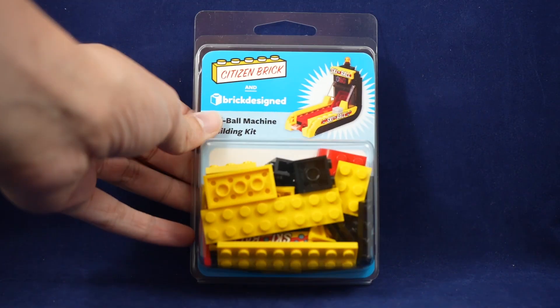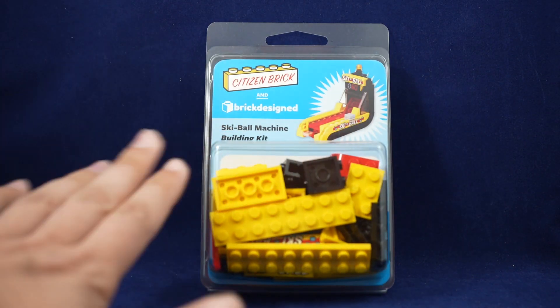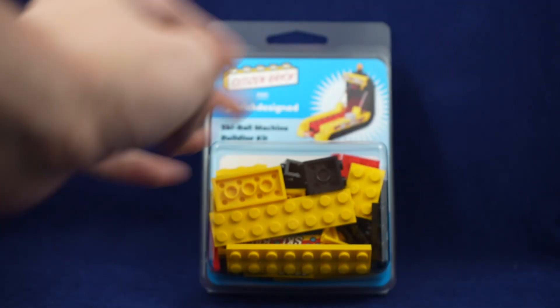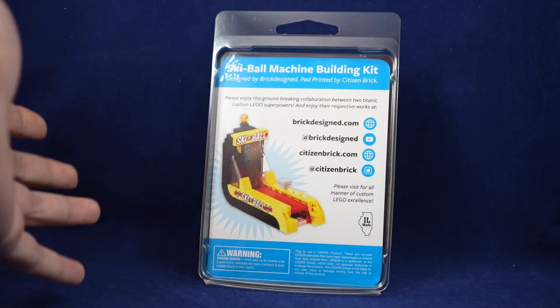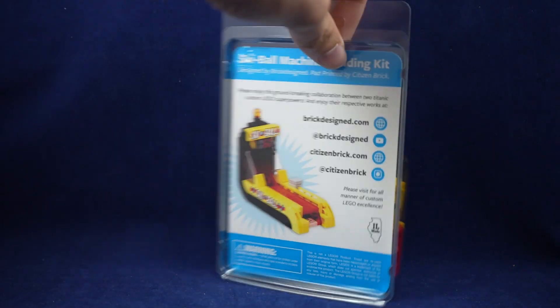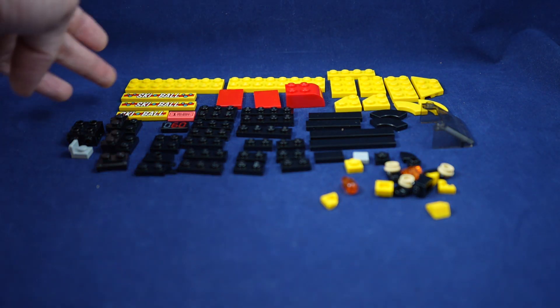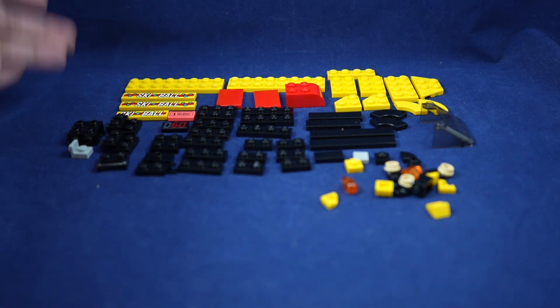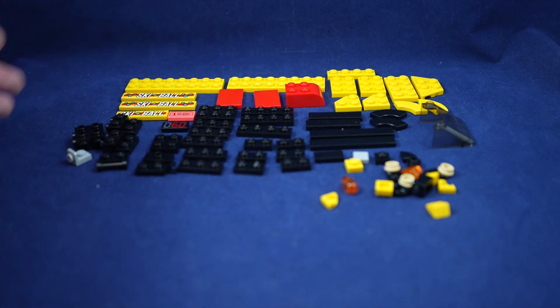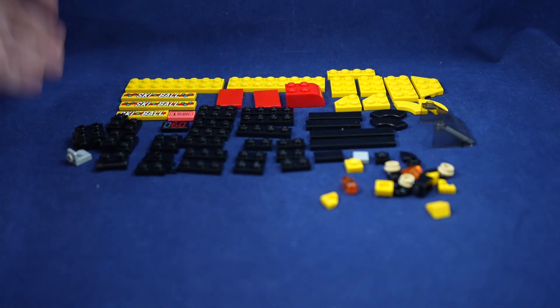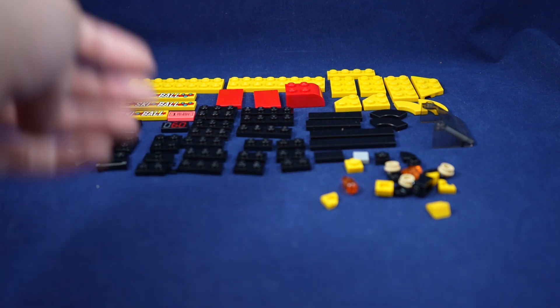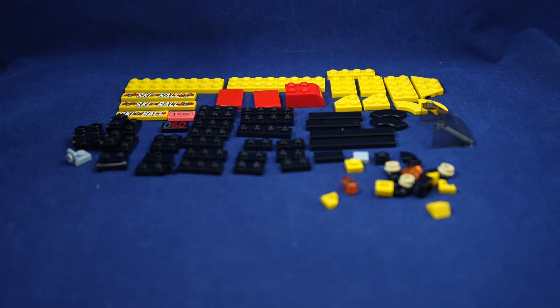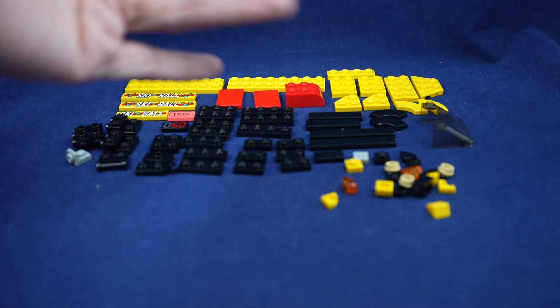For the next set it's the medium-sized offering here being the skeeball machine. Lots of color here with the yellow and red. Same style of packaging with the same basic layout. The instructions again a QR code. Let's get these parts laid out and you can see all 69 parts with five printed ones by Citizen Brick. Like I said you know a little bit more color here with the yellow and reds. And honestly it's kind of surprising how close the piece counts are for the slot machine and this one. I guess this one just has some more bulkier parts.